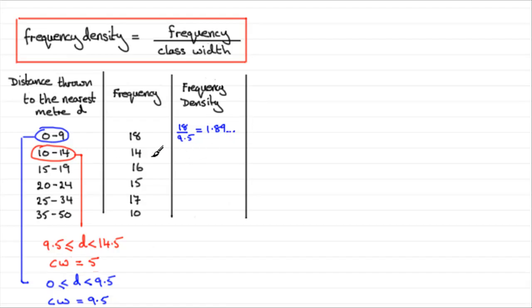And when it comes to working out the frequency density for the class 10 to 14, we've got to do 14 divided by the class width, which we know is 5 units going from 9.5 to 14.5. And if you do 14 divided by 5, you get 2.8. Now you need to work out the other values. You might like to pause the video and give it a go.